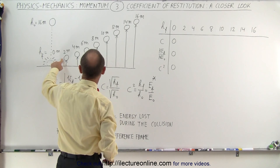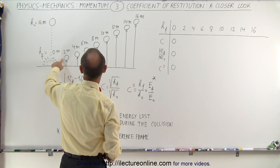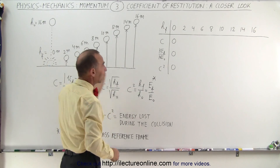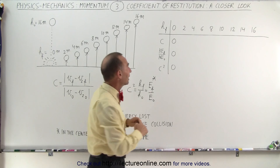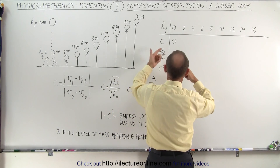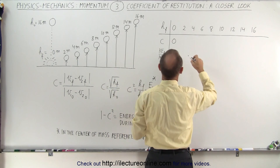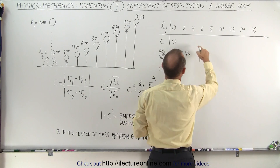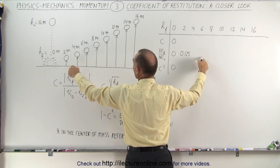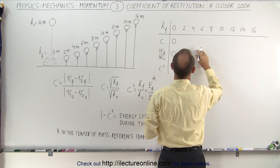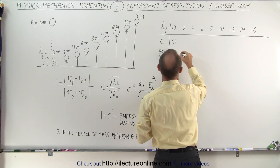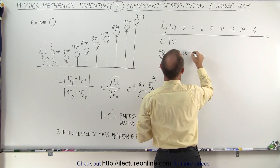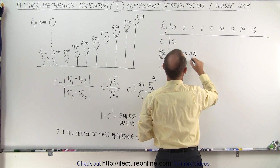But if it bounces back up to 2 meters, then the ratio of the final height to the initial height is going to be 2 divided by 16, or 1/8. That means the ratio for the kinetic energies after to before will be 1/8, or 0.125. If it goes back up 4 meters, that's 4 divided by 16, which will be 1/4, or 0.25.